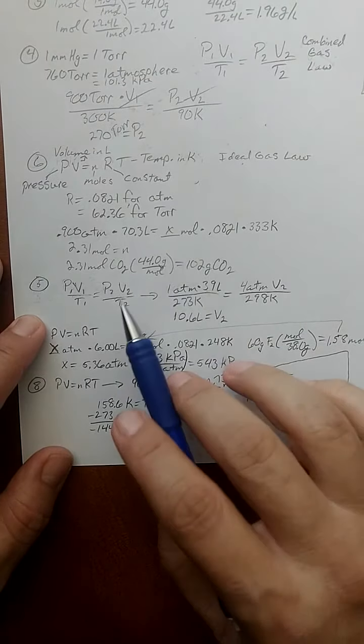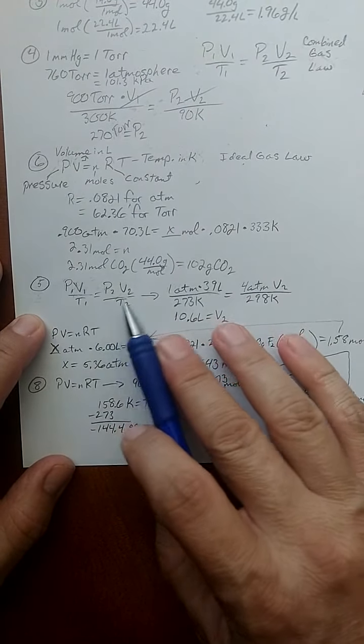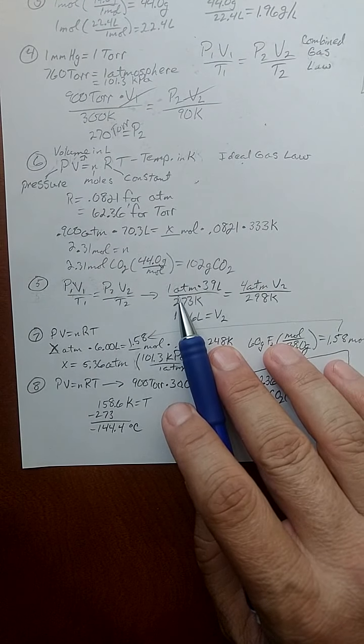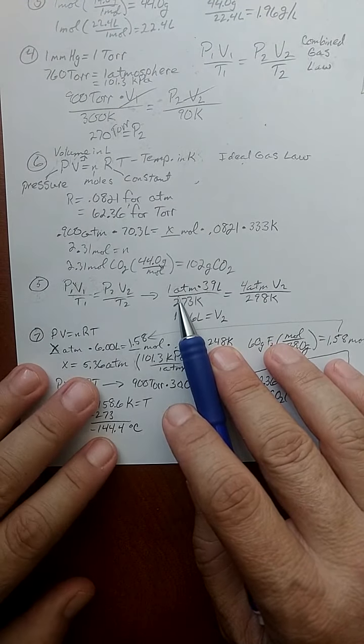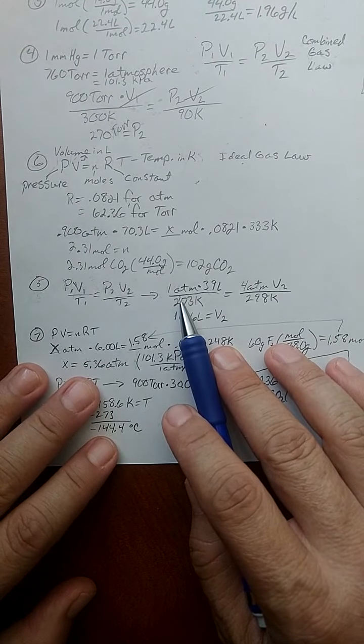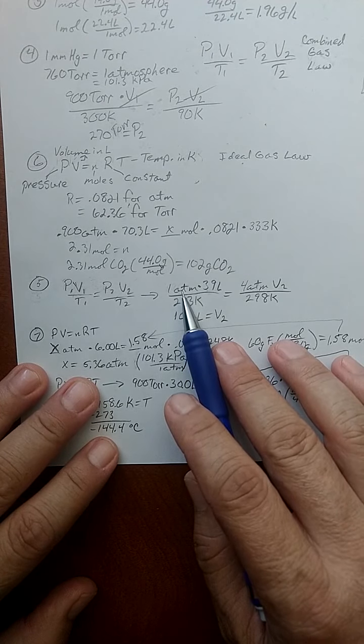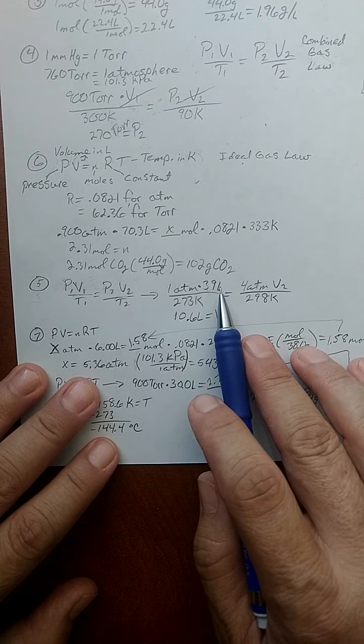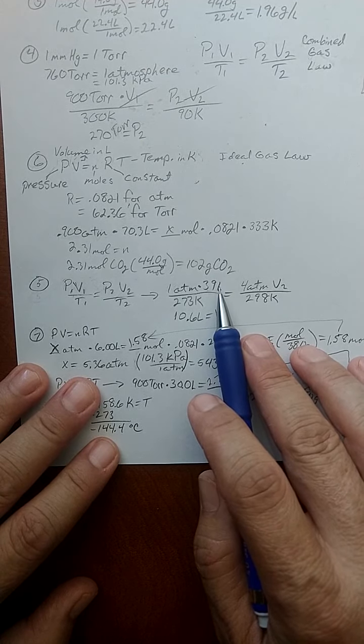Let's go on to five. Here we have our formula again, and they tell us some information that the situation at first is at STP, standard temperature and pressure. There's my standard pressure. There's my standard temperature. They tell me that I have 39 liters.